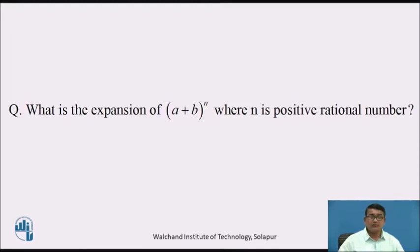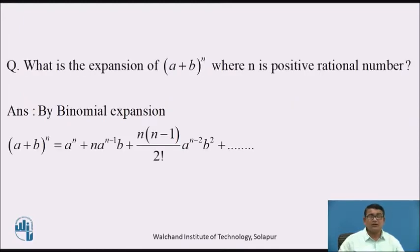The answer is given by the binomial expansion: (a + b)^n = a^n + n·a^(n−1)·b^1 + [n(n−1)/2!]·a^(n−2)·b² + ...